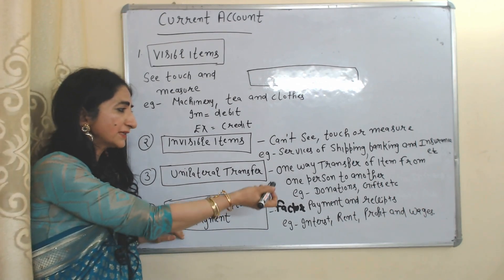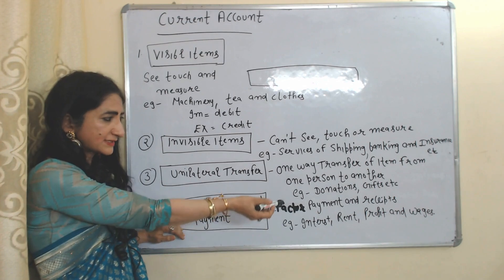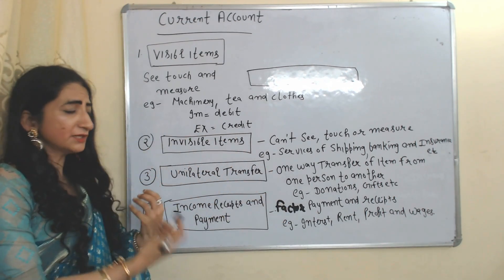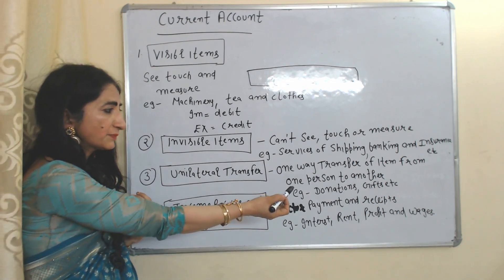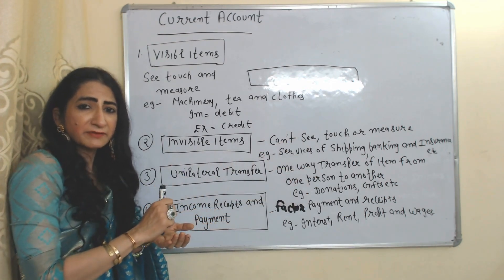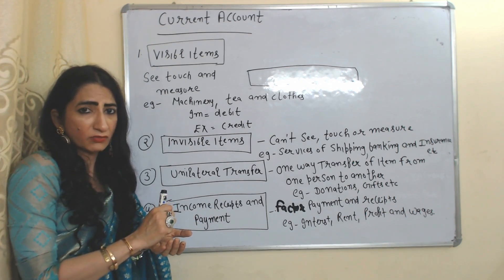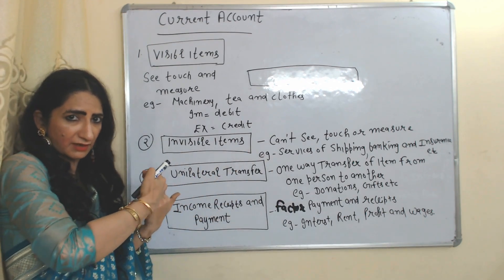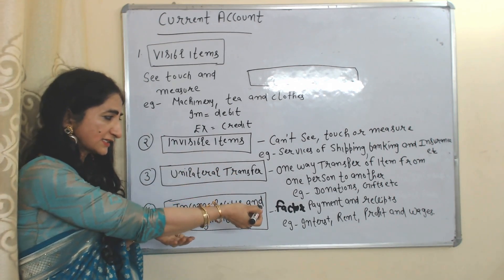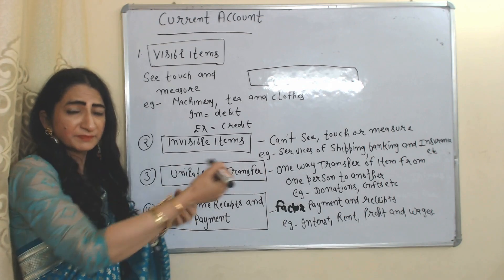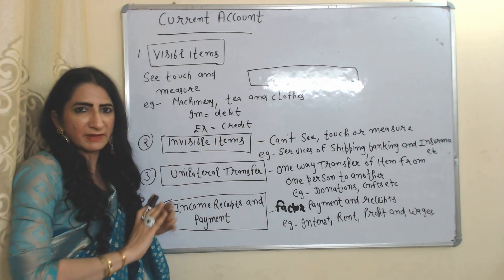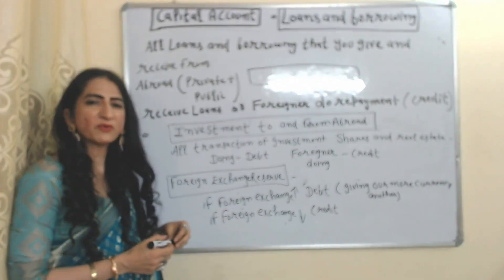Income receipts and payments means factor payments and receipts in the form of interest, rent, profit, and wages. If we are receiving money in the form of interest, rent, profit, and wages from abroad, it will be credited. If our money is going to another country in these forms, it will be debited in our Balance of Payment account.